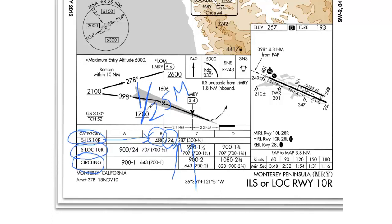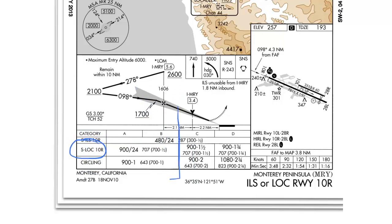Next, let's look at the localizer minimums — they are just a little bit different. You can see that the localizer is broken into two sections: one for category A and B, and one for category C and D. This is because the faster aircraft have less reaction time while flying the approach and therefore need just a little bit more visibility to safely execute the landing. The first number, in this case 900 feet, on a non-precision approach is your minimum descent altitude — it is the lowest that you can go on that approach.